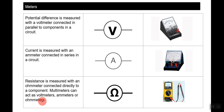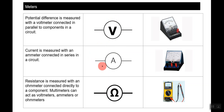Resistance is measured with an ohmmeter, connected directly to the component. Multimeters can act as voltmeters, ammeters, or ohmmeters. So if you're asked how to measure voltage, use a voltmeter; current, use an ammeter; resistance, use an ohmmeter or multimeter. Meters are essentially like measuring tapes for electronics.